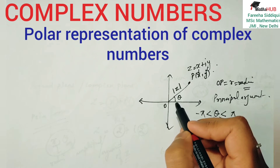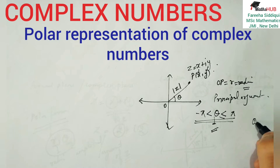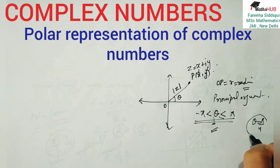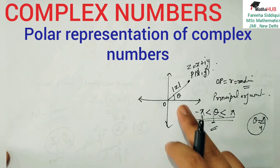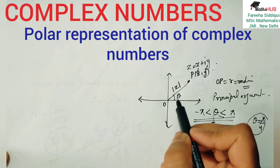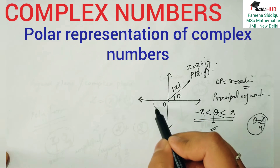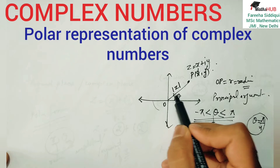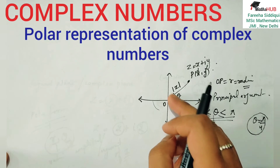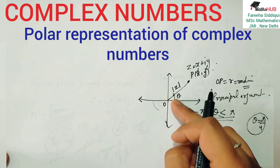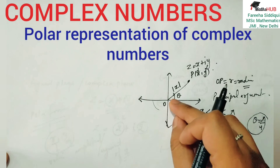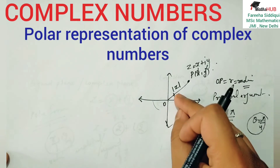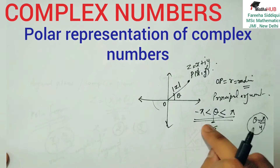Principal argument means those arguments which have theta in the range from minus pi to plus pi. Yani angle ki value minus pi se badi honi chahiye aur pi se choti ya equal honi chahiye — wohi theta aap accept karenge. For example, if you take theta = 45° (pi/4), and then you go all the way around and come back to 45°, the same angle is formed — argument is the same. So whether you start from pi/4 or go a full round and then pi/4 more, the value is the same — isliye hum sirf principal values lete hain.